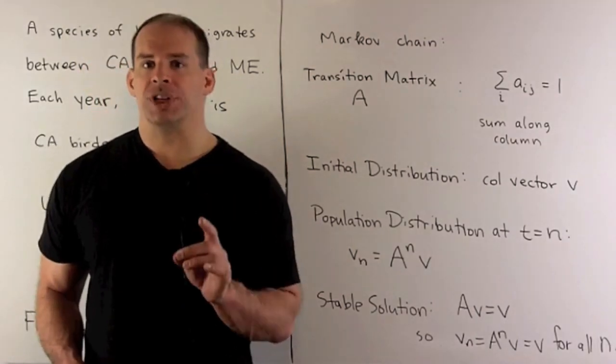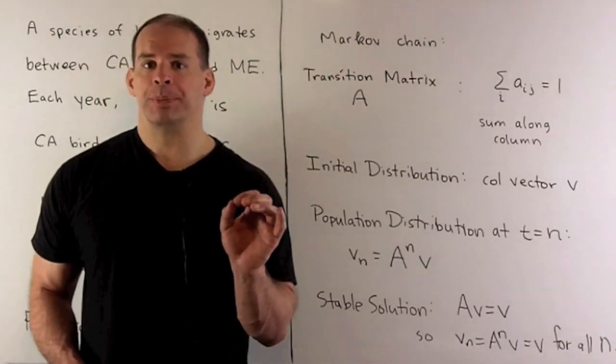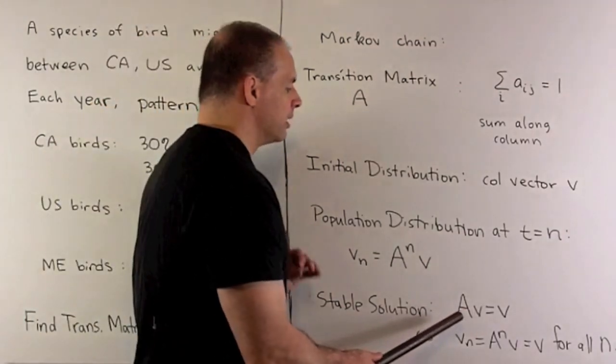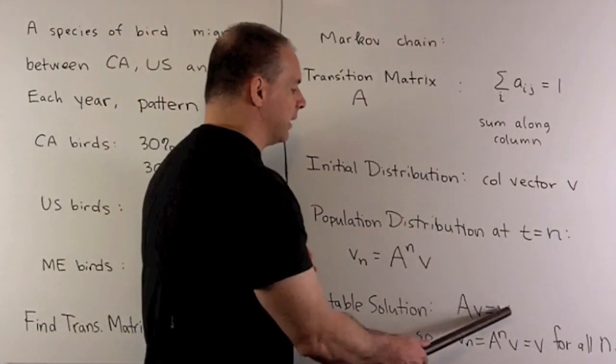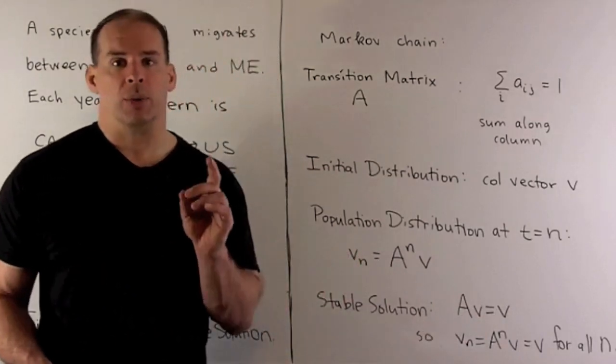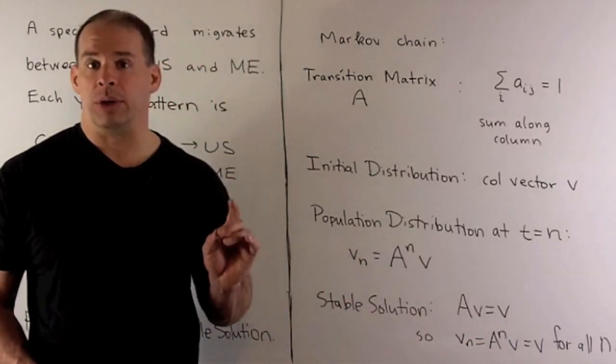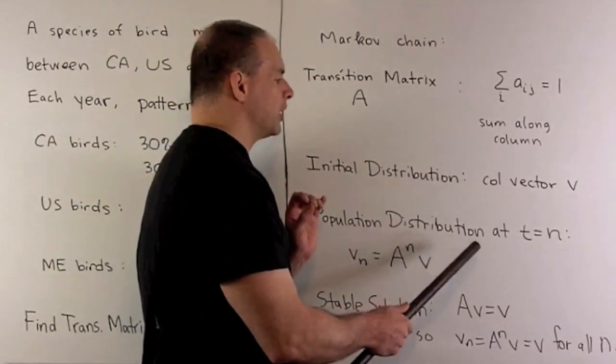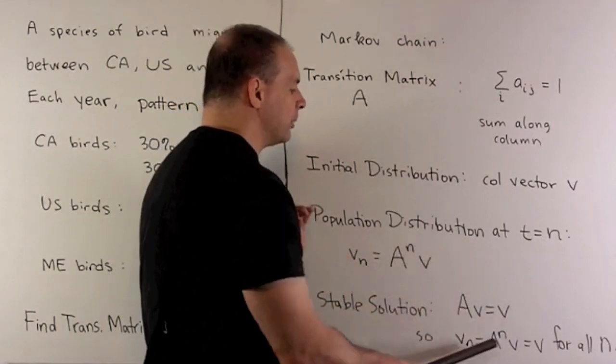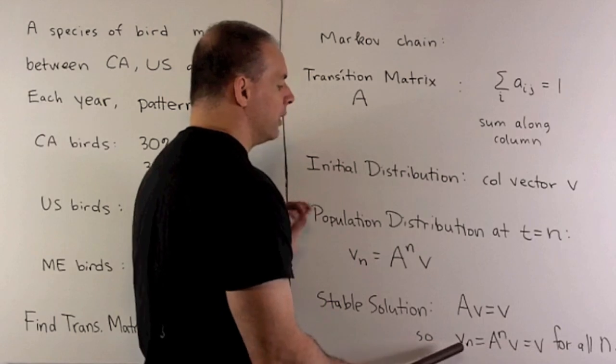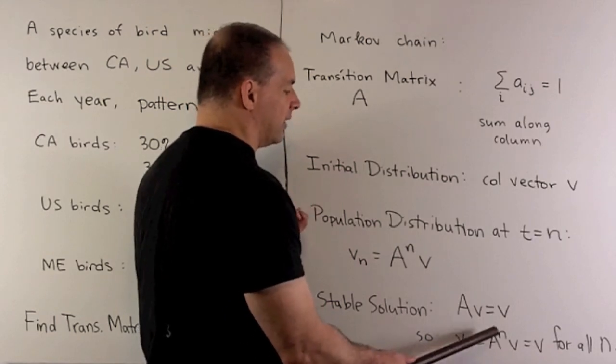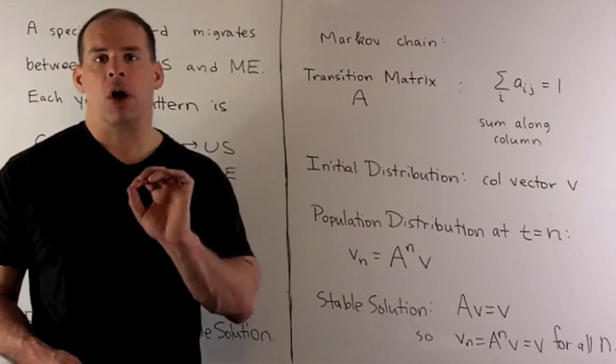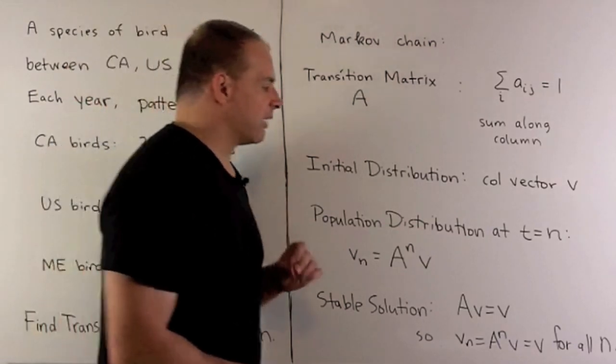One thing of interest is stable population. The idea here is if I can find a vector V such that when I apply A to it, we get V back. Here we have an eigenvector with eigenvalue equal to 1. Then, you'll note, our population distribution at any time is always going to be the same. We take V_n, which is A to the n times V. Well, anytime I hit V with A, we get V back. So, all those A's go away, and I'm just left with V.